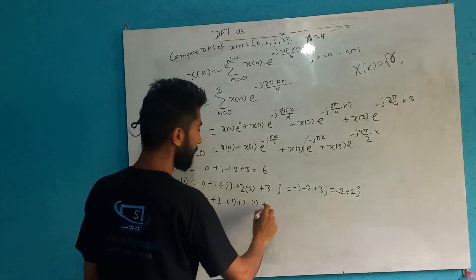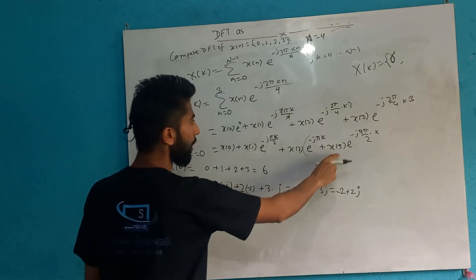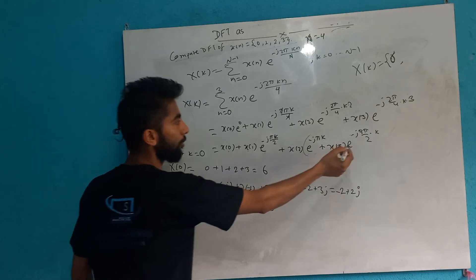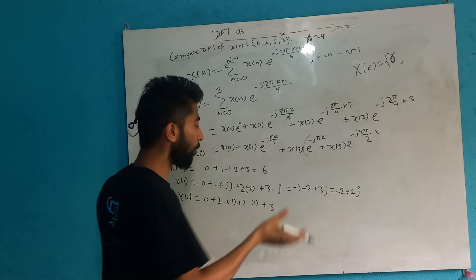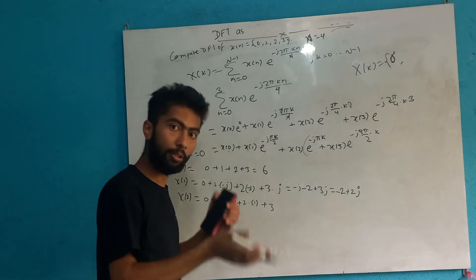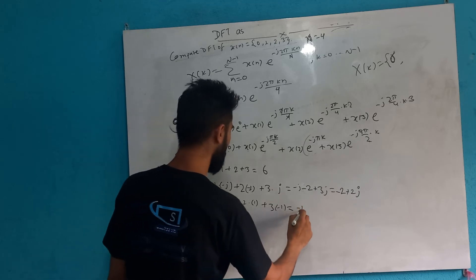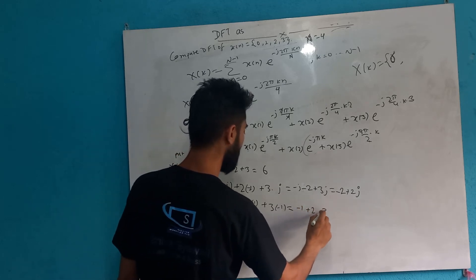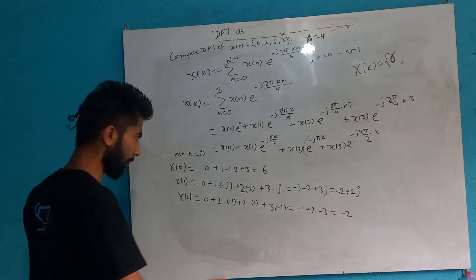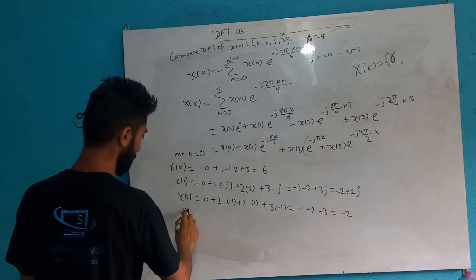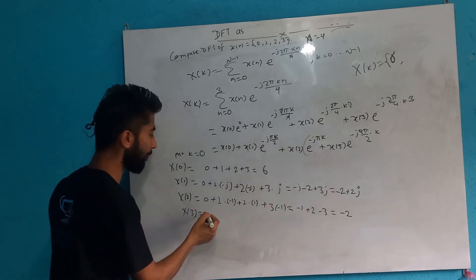x[3] is equal to 3. x[3] into e to the power minus j 3pi by 2 times 3. Sin 3pi is equal to 0, so x[3] term becomes minus 1. So y[2] will be minus 1.